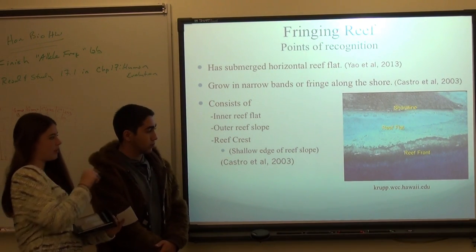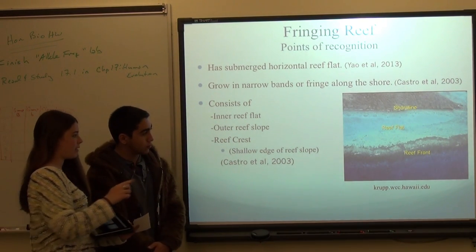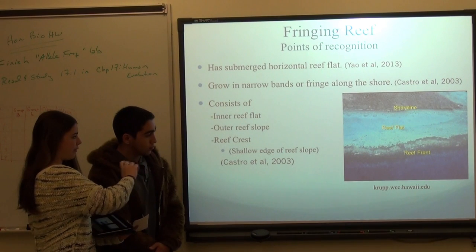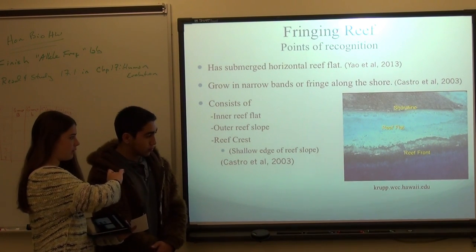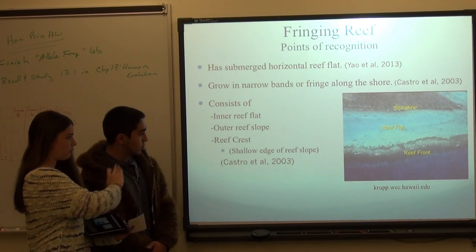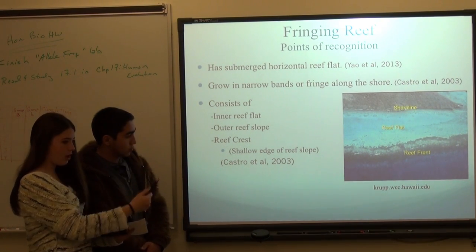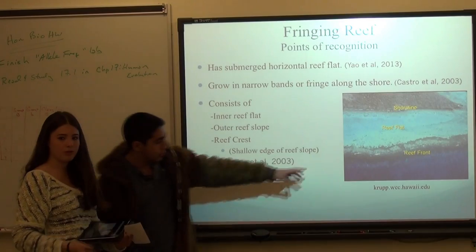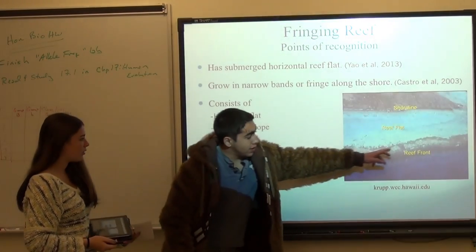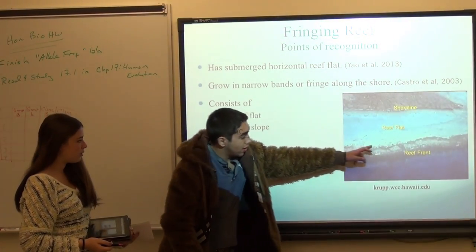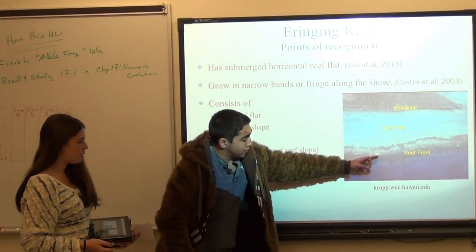If you could see from the shoreline, the reef flat is right on the shore and then it just kind of drops, and that's where the reef is. This would be the reef crest, and then here is the reef slope.